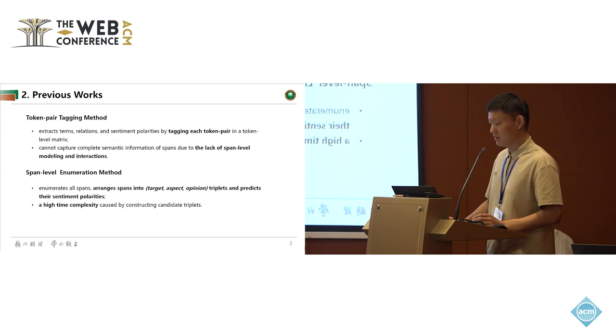Two types of previous works performed best: token pair tagging method and span level enumeration method. The former extracts terms, relations, and sentiment polarities by tagging each token pair in a token level matrix. But they cannot capture complete semantic information of spans due to the lack of span level modeling and interactions.